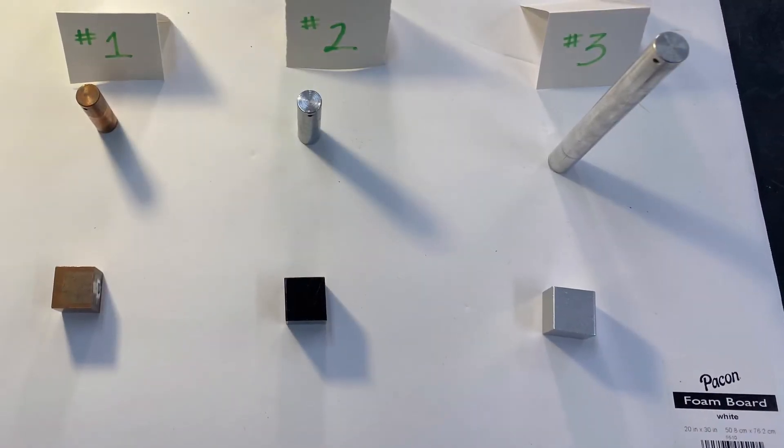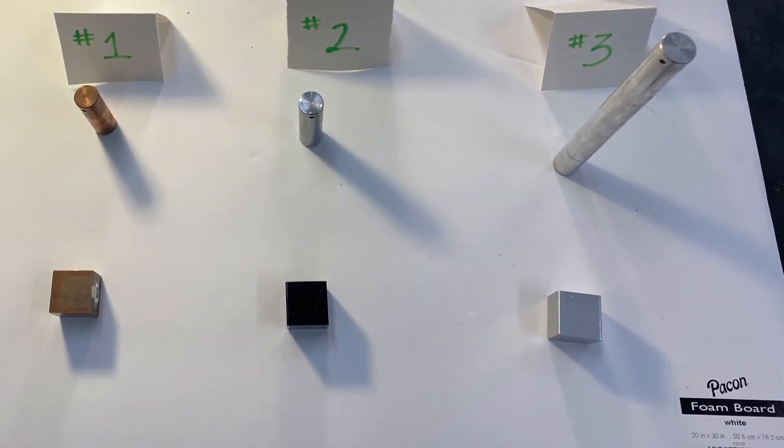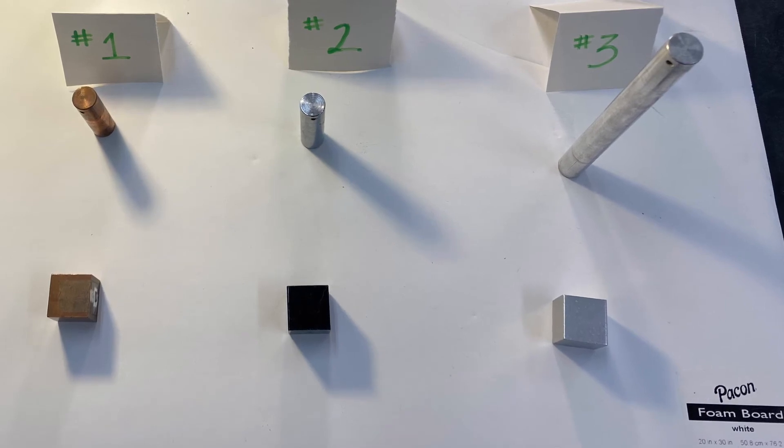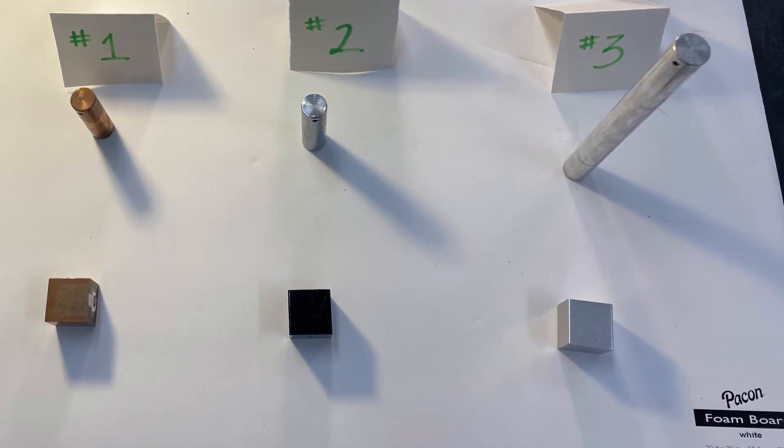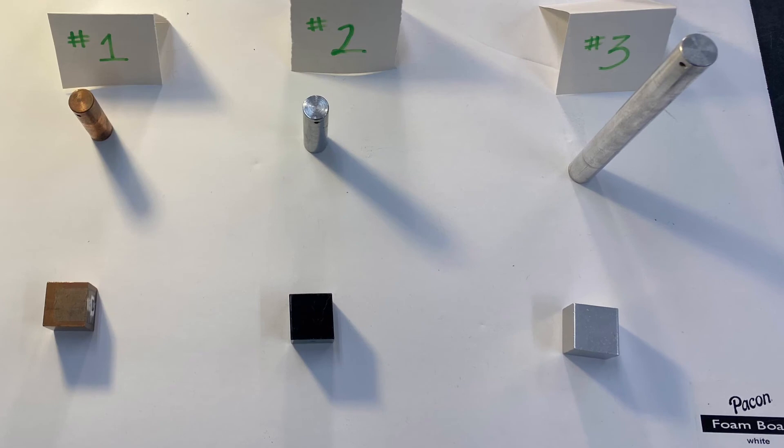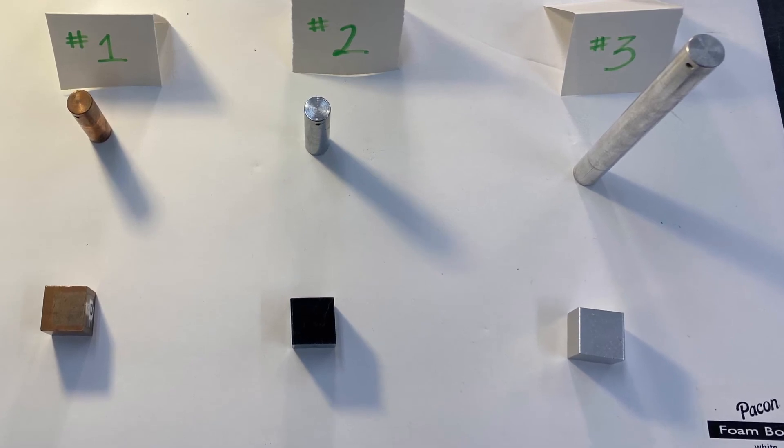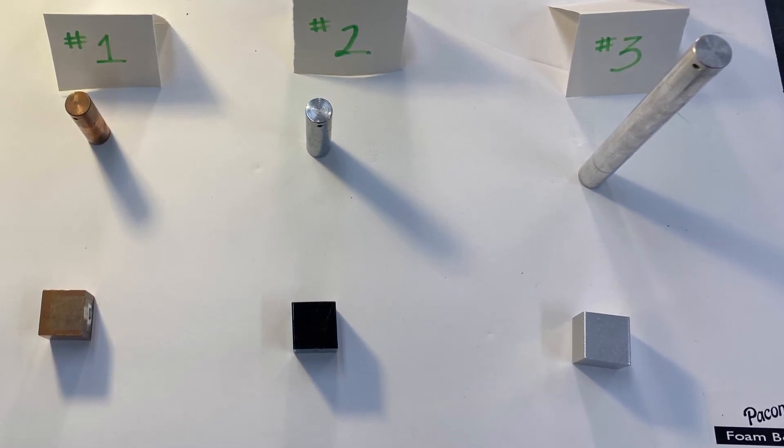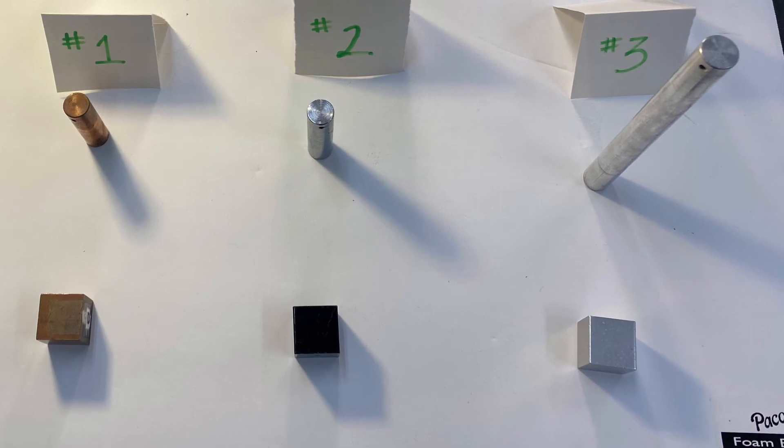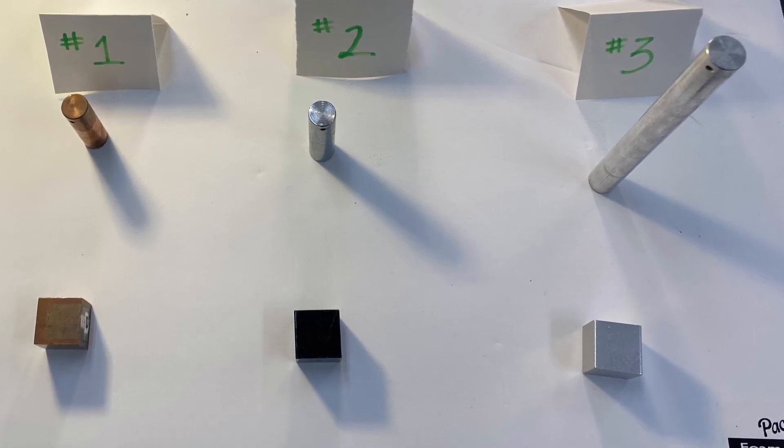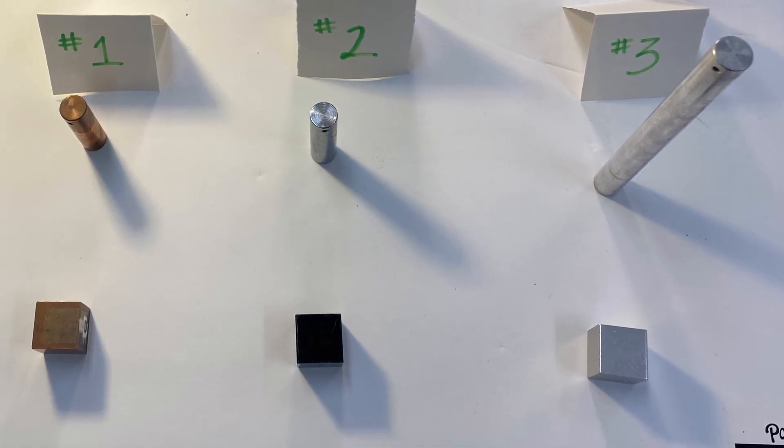Now use the data of mass and volume of each of these six objects to calculate the density. Once the density has been calculated, you should be able to tell which cylinder and block is made of the same material, and by looking at a reference table, what the material is. Identify the material of each.